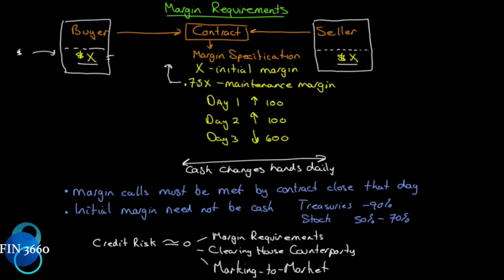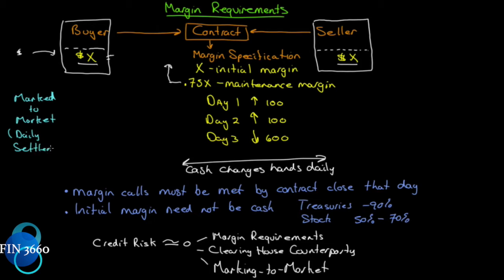Let's have an example showing a concept in futures markets called marked to market — also referred to as daily settlement. So you can see how the profit and loss works on a futures contract.